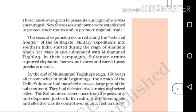Military expeditions into southern India started during the reign of Alauddin Khalji and culminated with Muhammad Tughlaq. In their campaigns, Sultani armies captured elephants, horses and slaves and carried away precious metals.